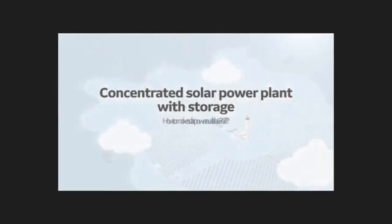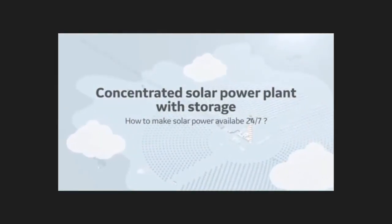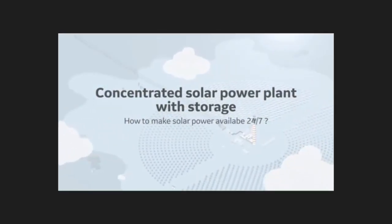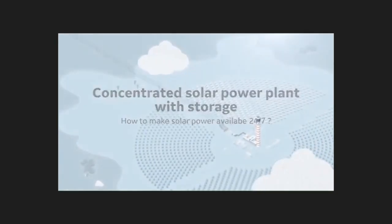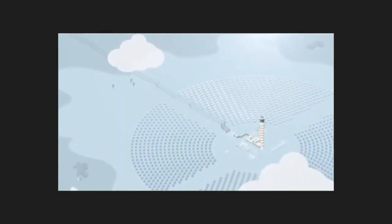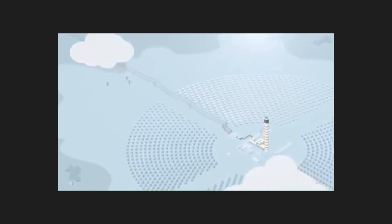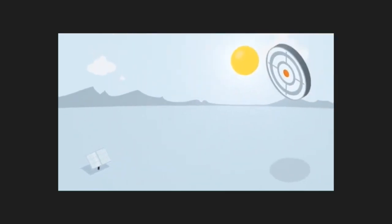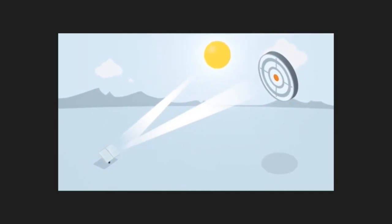Concentrated solar power produces electricity from the heat from the sun's rays. It's an effective source of large-scale energy production. A solar farm is made up of heliostats - computer-controlled mirrors which follow the movement of the sun to best reflect its rays towards a central point throughout the day.